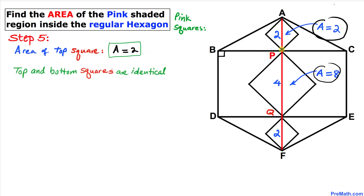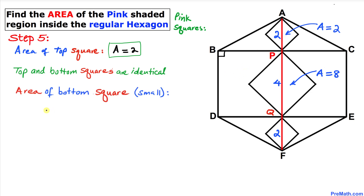The top and bottom squares both have the same diagonal D equals 2, so they are identical. Therefore the area of the bottom square is 2 square units as well.